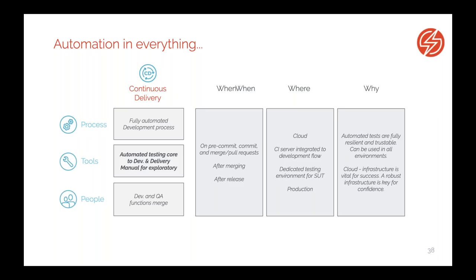We can run our tests when we commit, when we merge, when we do pull requests, and even after we release. This means we can do what we do here at Sauce Labs — when we deploy changes to the cloud, we run a bunch of post-deployment tests to double-check everything is okay, and if it is, we let users use our new version. Since we've been through all these phases, all our tests are resilient and trustable, and we can use them in all environments — locally, in staging, or in production as monitoring.